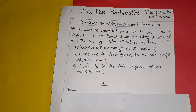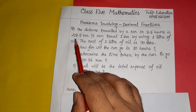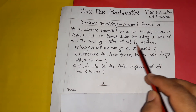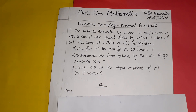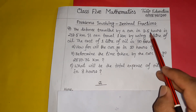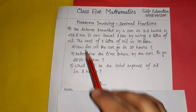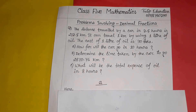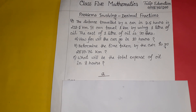So the given information is: the car travels 213.5 kilometers in 3.5 hours. The car uses one liter of oil per kilometer. The cost of one liter of oil is 90 taka. These are the clues we can use to solve the first question — how far will the car go in 10 hours? We will use the unitary method to solve this decimal fraction problem.